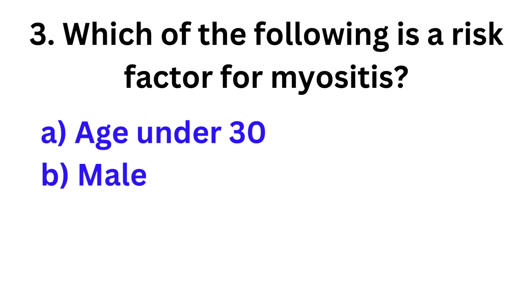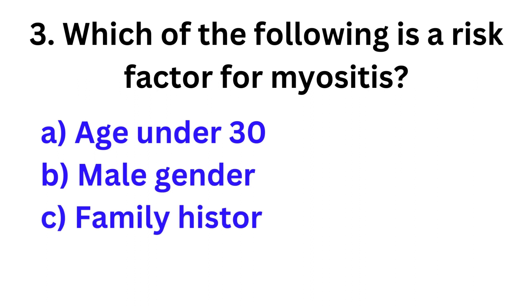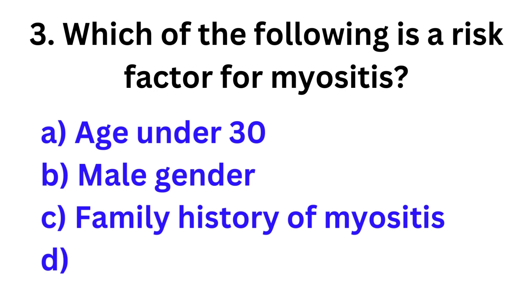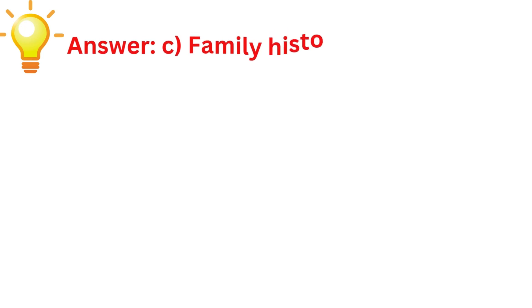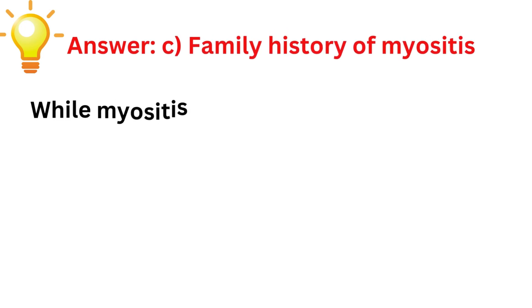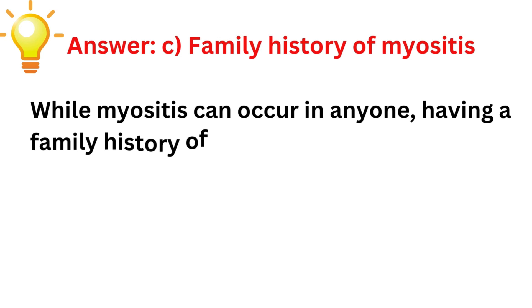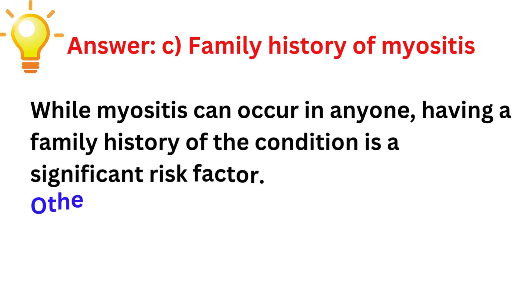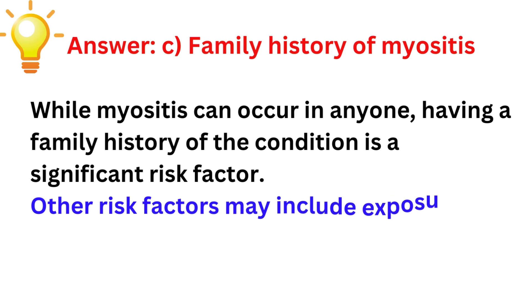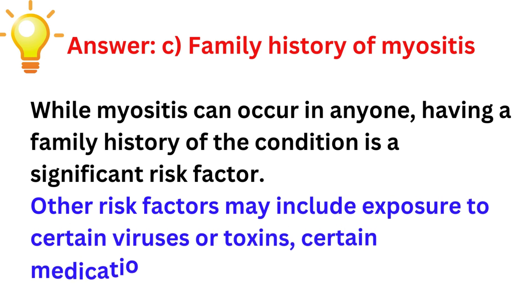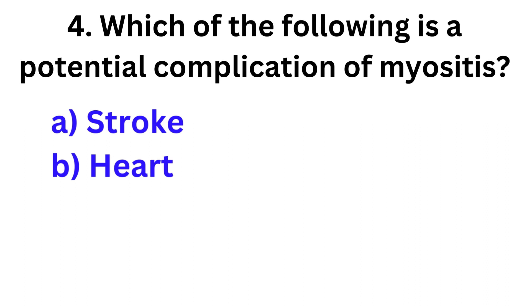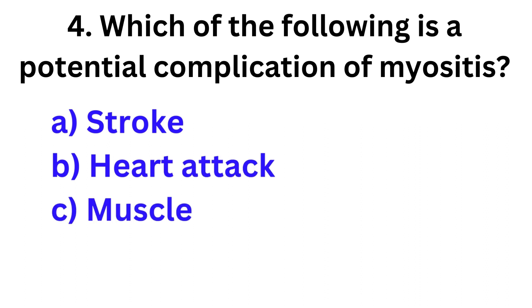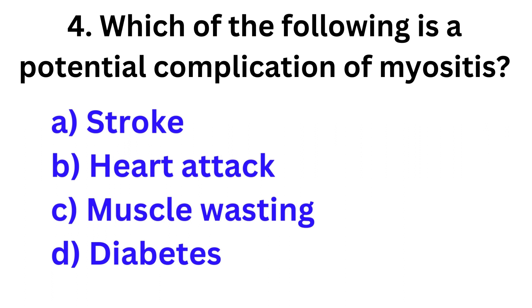Which of the following is a risk factor for myositis? Options: age under 30, male gender, family history of myositis, sedentary lifestyle. Correct answer is family history of myositis. While myositis can occur in anyone, having a family history of the condition is a significant risk factor. Other risk factors may include exposure to certain viruses or toxins, certain medications, and autoimmune disorders.